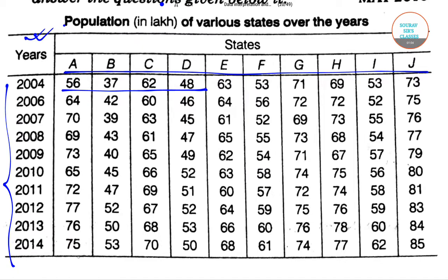From the 2014 column, the population values are: 75, 53, 70, 50 — so till now 50 is the lowest. Continuing: 68, 61, 74, 77, 62, 85. So 50 remains the lowest.